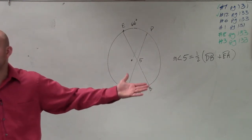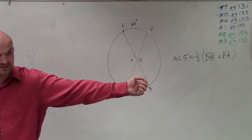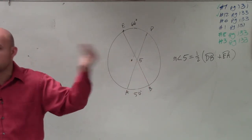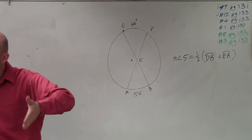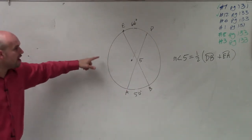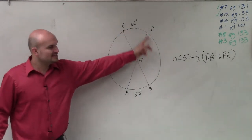That's different than when the angle was outside, or when the point was outside. That's when you do subtraction, large arc minus small arc. So now we're doing the sums. But the problem is, we don't know what these two arcs are.